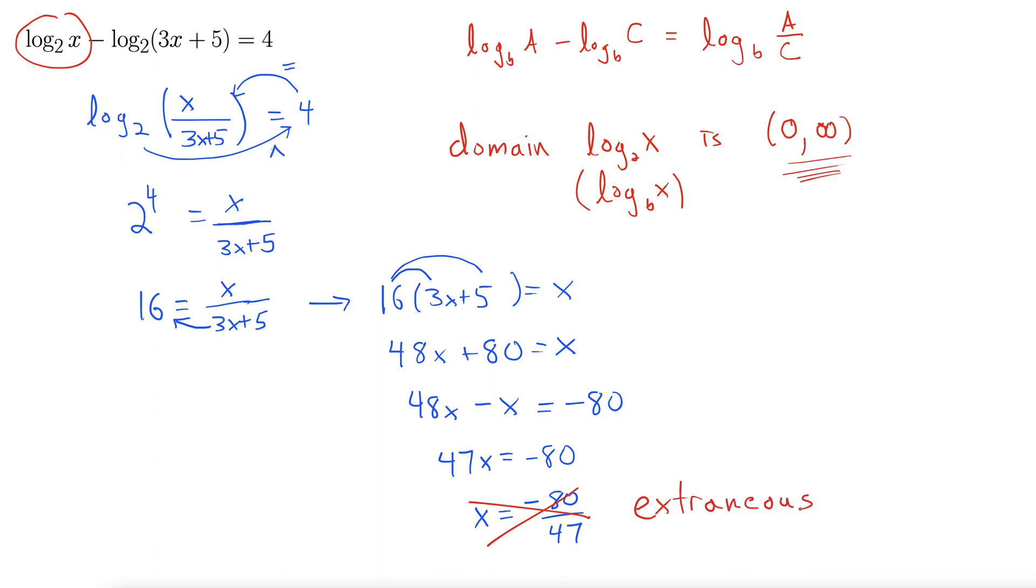That's what we call it when a solution appears to be a solution, but it's really not. We say it's an extraneous solution. Well, that was the only solution we had. So what does that mean? Well, that means we can write one of two things.